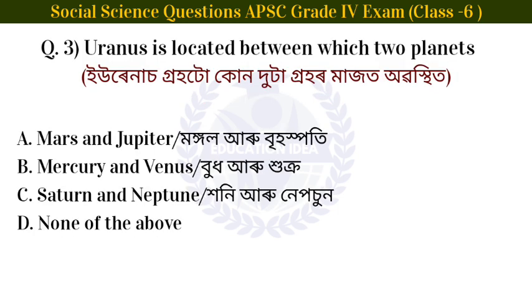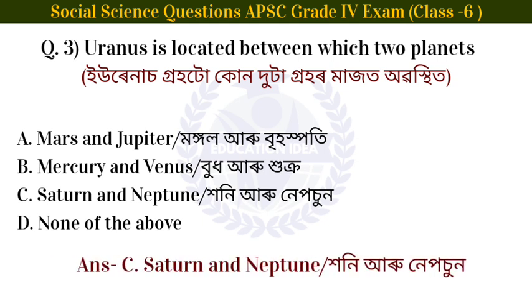Next question: Uranus is located between which two planets? Option: Uranus is located between Saturn and Neptune.